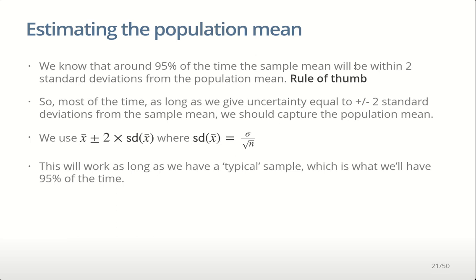The second thing we can do is confidence intervals — we can estimate things. We know that around 95% of the time the sample mean will be within two standard deviations of the population mean. 95% of the time, sample means come from a normal distribution within two standard deviations. So most of the time, as long as we give uncertainty of plus or minus two standard deviations of the sample mean, we should capture the population mean. We use the sample mean plus or minus twice the standard deviation of the sample mean, given by that formula.